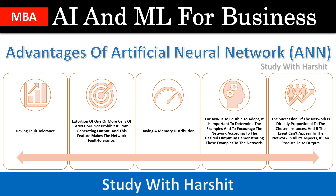The next advantage is having memory distribution. For ANN to be able to adapt, it is important to determine the examples and to increase the network according to the desired output. By demonstrating these examples to the network, the success of the network is directly proportional to the chosen instances.